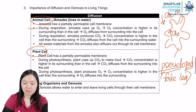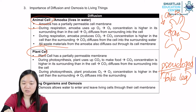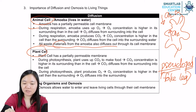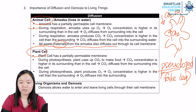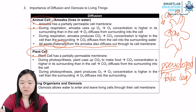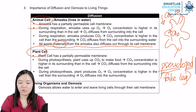All waste material from the amoeba — all types of waste material including urea and salts — will diffuse out through its cell membrane.